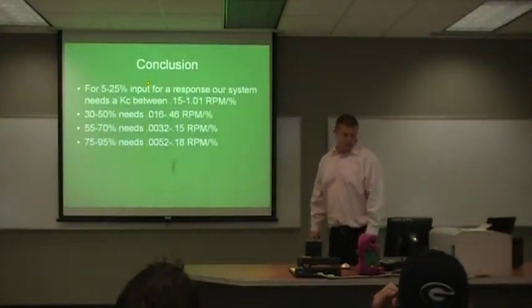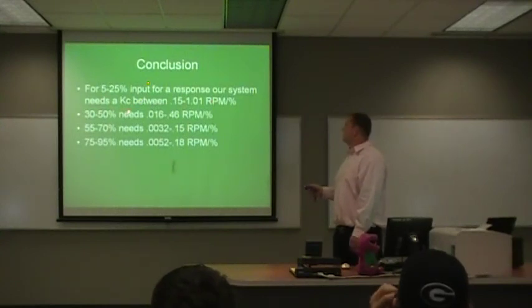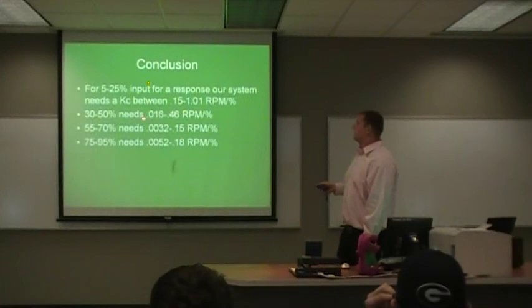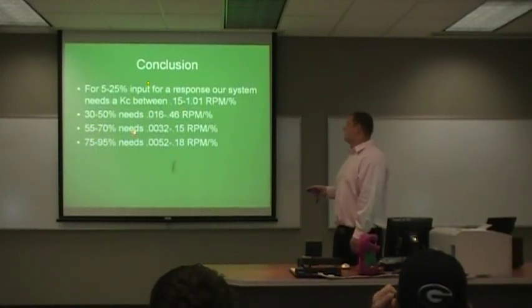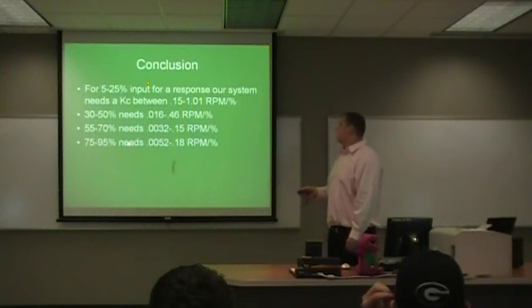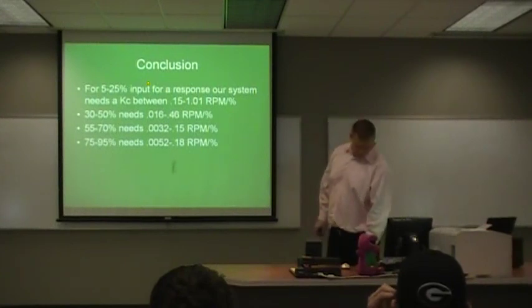And in conclusion, for a response to the 5 to 25 percent, you need KZ from 0 to 0.15, 0 to 0.1 RP percent. For the 30 to 50 percent, you need 0.016 to 0.46. 55 to 70 percent, you need 0.0032 to 0.15. 75 percent to 95 percent, you need 0.0052 to 0.18 RP percent per percent. And that's it.